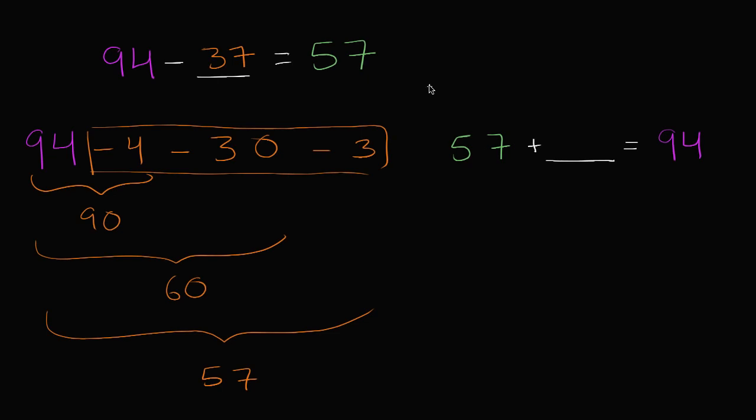And you could have tackled it exactly the way that we did the last problem. Where you could, hey, I'm going to add three, and then I'm going to have to add 30. If I add three, I get to 60. Then if I add 30, I get to 90. And then if I add another four, I get to 94. So I added 37.